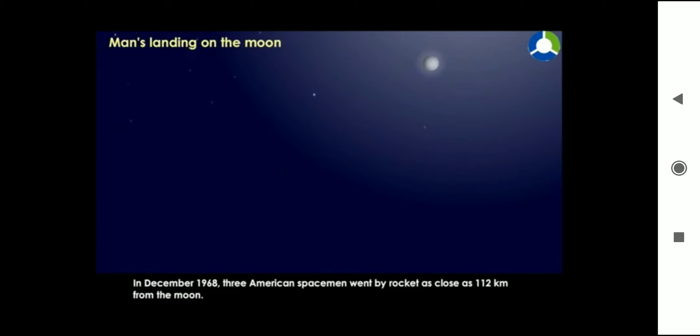In December 1968, three American spacemen went by rocket as close as 112 kilometers from the moon.